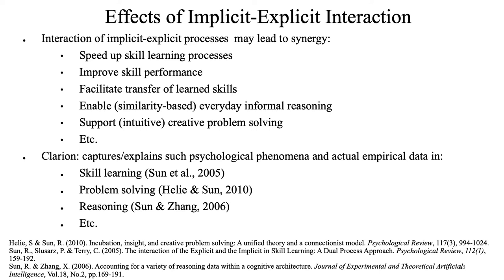In terms of the effects of the implicit-explicit interaction, from the psychological literature we know that the interaction may lead to synergy — for example, in terms of speeding up skill learning, improving performance, facilitating transfer of learning skills, enabling everyday informal reasoning, supporting creative problem-solving, and so on. Clarion can capture and explain such psychological phenomena and actual empirical data in a number of domains, as described in the publications listed.